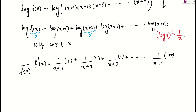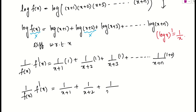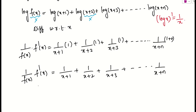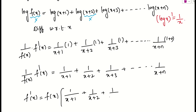So we have (1/f(x)) · f'(x) = 1/(x+1) + 1/(x+2) + 1/(x+3) + ... + 1/(x+n). We want f'(x), so multiplying both sides by f(x): f'(x) = f(x) · [1/(x+1) + 1/(x+2) + 1/(x+3) + ... + 1/(x+n)].